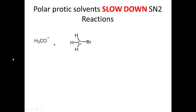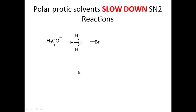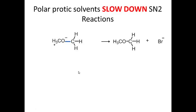Let's look at an example of a reaction going through the SN2 mechanism: the methoxy anion reacting with bromomethane. The nucleophile comes in, the leaving group leaves, and now I have a new bond between oxygen and carbon in my product. Polar protic solvents slow this SN2 reaction down, while polar aprotic solvents speed it up.